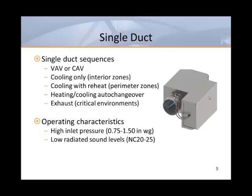Most single duct boxes, regardless of manufacturer, use the same round inlet and rectangular outlet configuration. This type of design reduces the inlet pressure requirement due to the static pressure regain that occurs when the air expands to fill the rectangular cabinet. The only real differences that distinguish between most manufacturers are lining options and inlet sensors on these types of boxes.